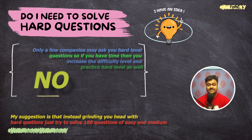If you are consistent for a duration of 3 to 6 months and keep following the steps I have shown you in this video, then you will definitely see a big improvement in your overall coding skillset.